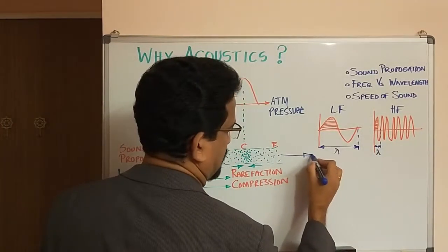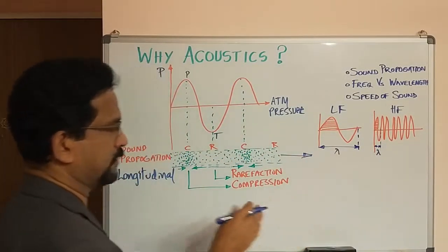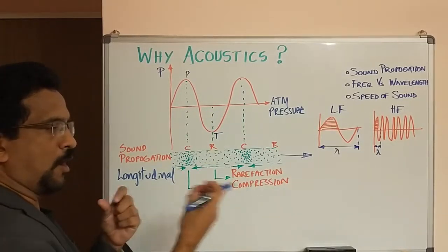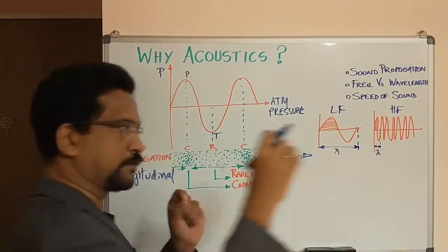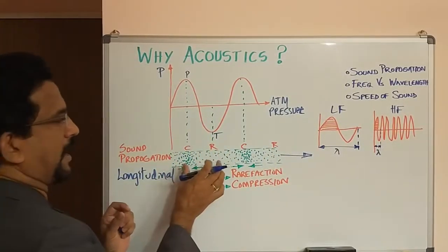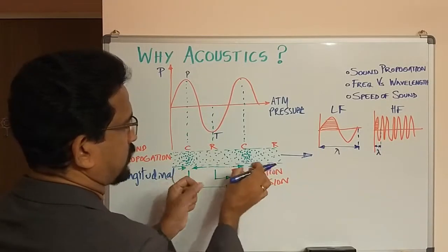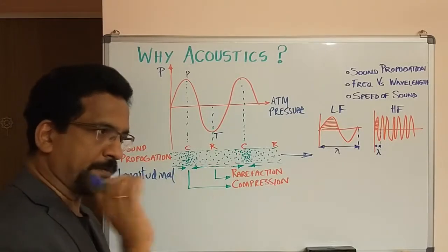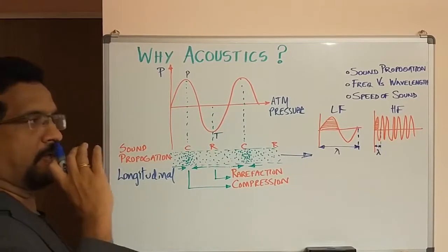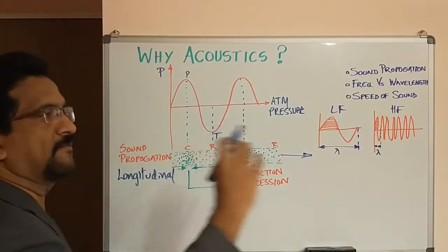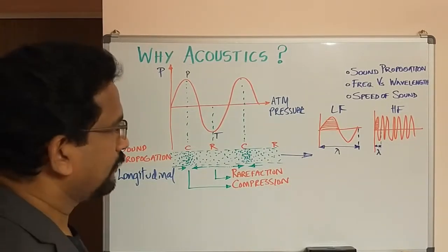When sound travels in a given direction, the air molecules oscillate in this particular fashion. It is not that air molecules travel all the way — rather, compression compresses in one area and expands in another. Like a spring when you pull it out and it oscillates, the air molecules vary in this direction, and this is how sound travels.